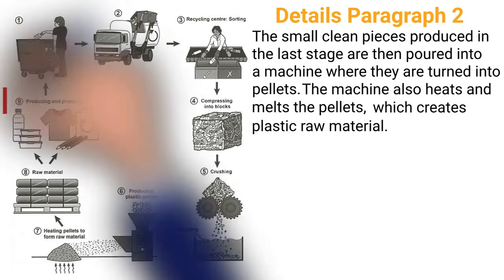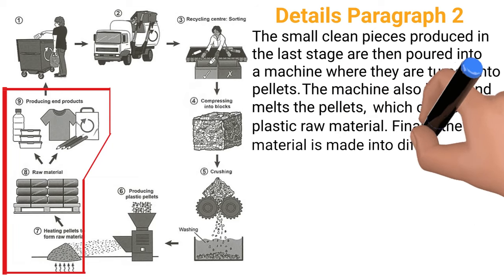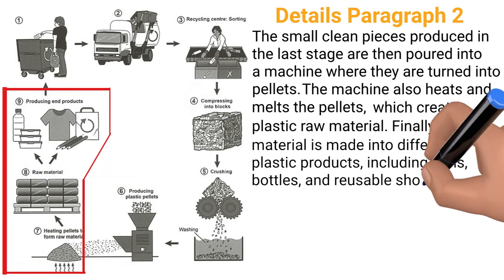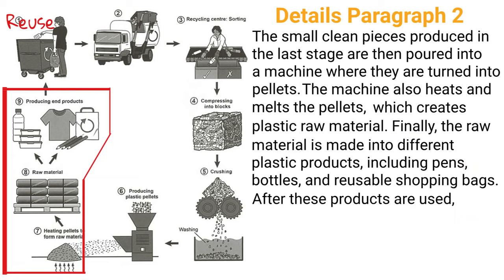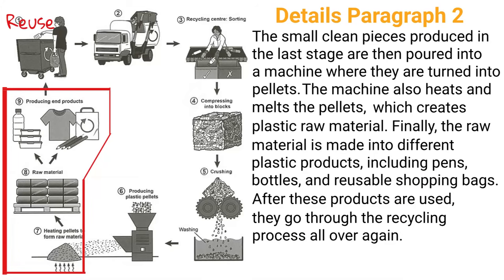Lastly, let's add step 9. 'Finally, the raw material is made into different plastic products including pens, bottles, and reusable shopping bags.' Now if you just end your essay like this, you won't have a complete cycle. Remember, the last step of this recycling process should be 'reuse.' So I will add: 'After these products are used, they go through the recycling process all over again.' Now the cycle is complete.